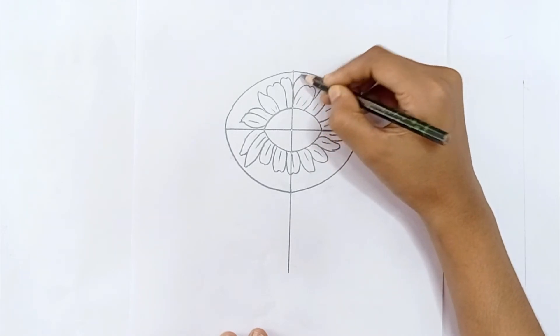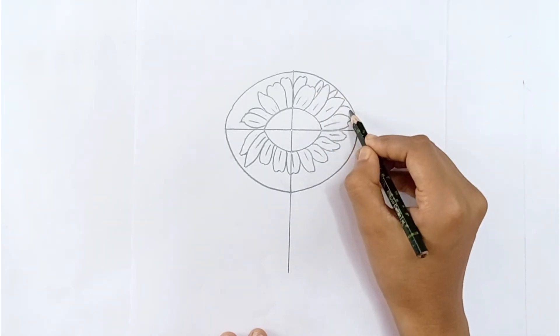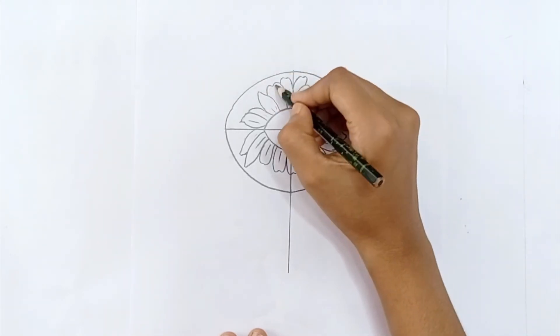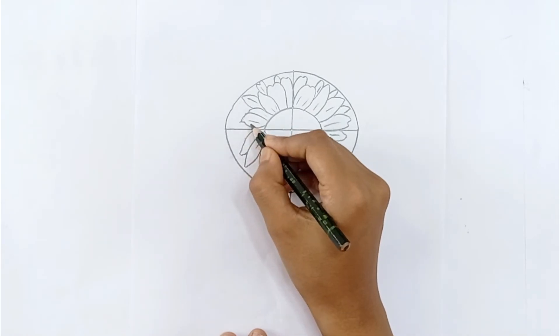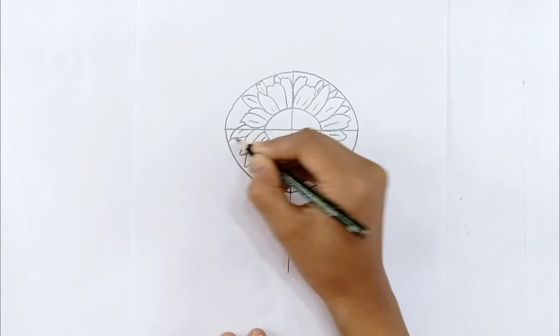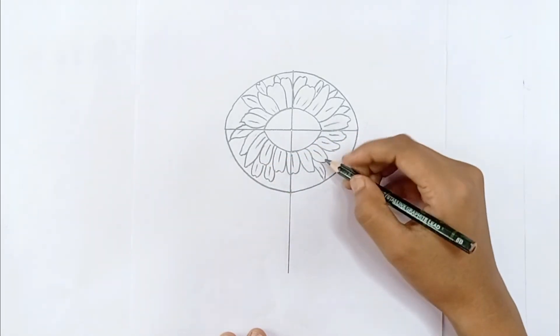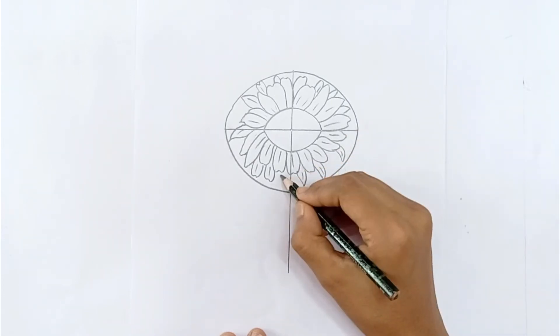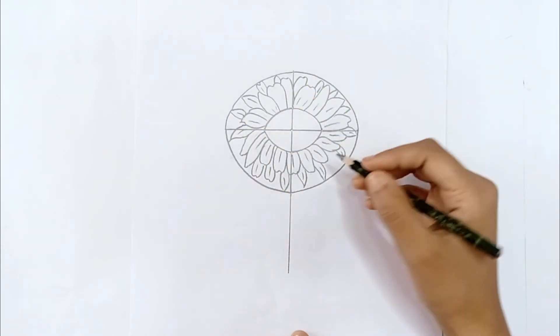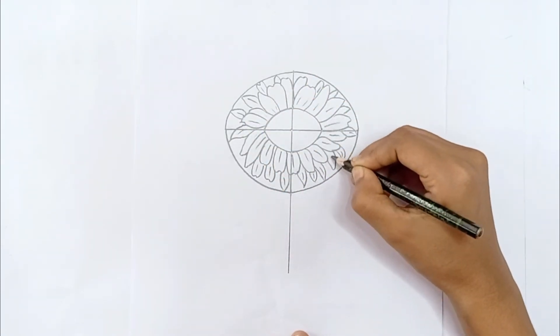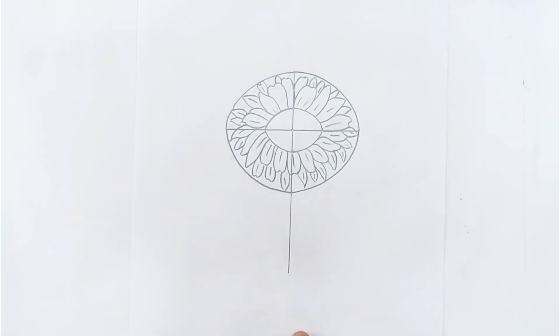Now we will draw the petals on the back. First I will start drawing the petals from the right side, then from the left side. Drawing the petals on the back will make the flower look more beautiful. Gradually it will look like a sunflower. If you put some petals in the middle the flower will look more gorgeous. Finally, the petal parts are completed.